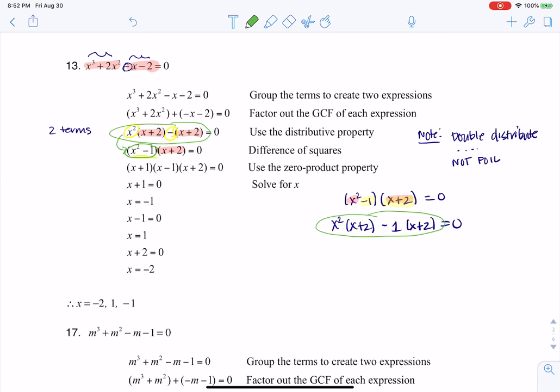And then you can see, I have a difference of squares here. So that's why I factor that into x minus 1 times x plus 1. And then I'm using the 0 product property. So either x plus 1 was equal to 0, x minus 1 is equal to 0, or x plus 2 is equal to 0. And there are my three solutions. So I hope that clears it up. Thanks so much. Bye.